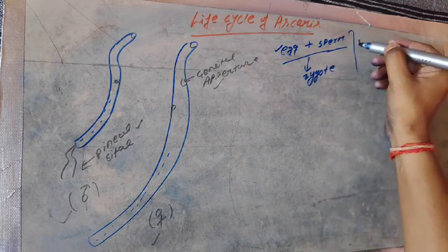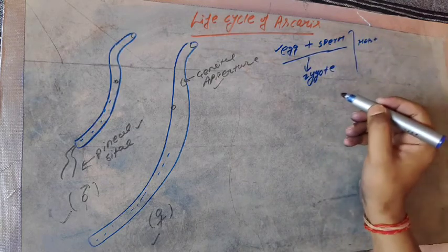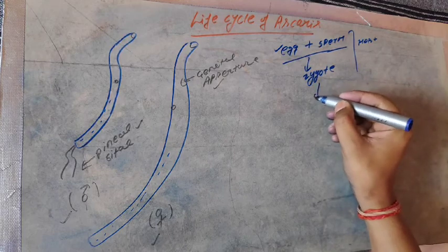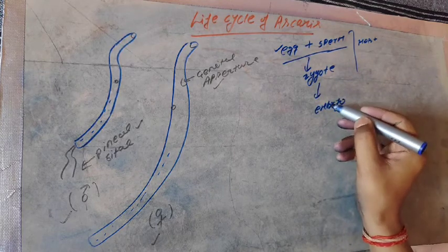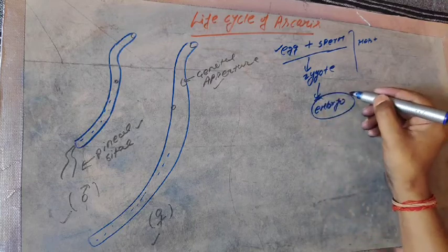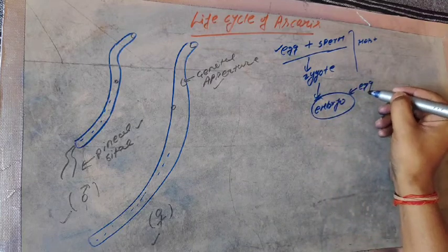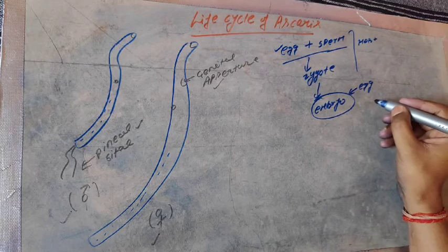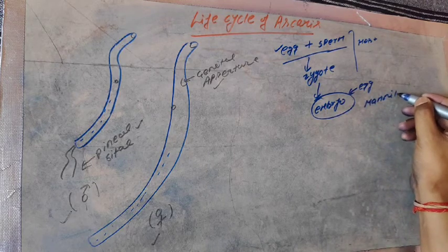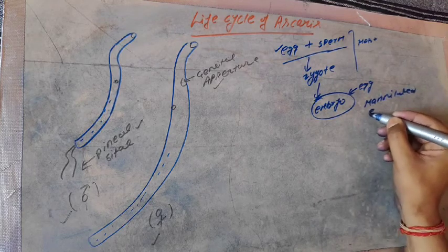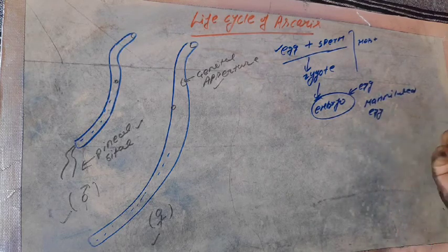It will occur in the host body, that is formation of zygote, which later converts into the embryo. And embryo later gets protected by the egg, and that egg is known as mammelated egg.